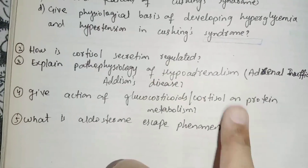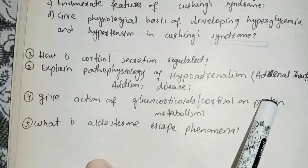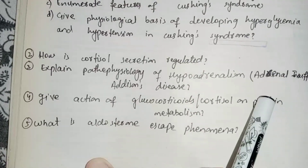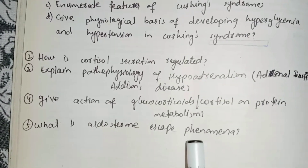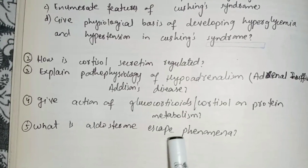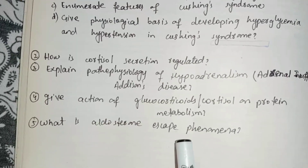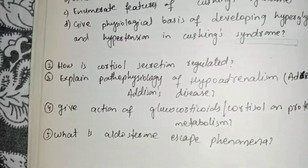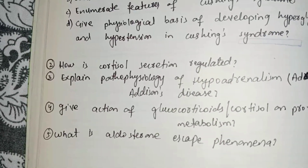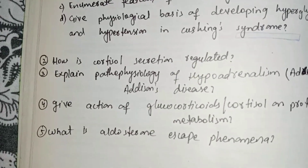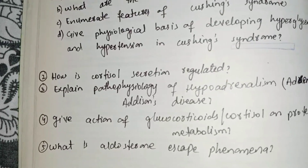Cortisol protein and fat metabolism and its actions are covered. You also need to know what aldosterone escape phenomena is — prepare that from the end of the video. Here we are done with chapter 78. Let's move to chapter 79. If anyone has any questions related to this chapter, you can ask in the comment section. Thank you.